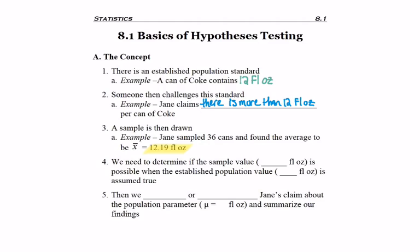Now we knew her sample data would not match the population data because of sampling error. Your sample usually doesn't match it. But now the key is we determine if the sample value she got, the 12.19, is it possible when the population value of 12 ounces is true?